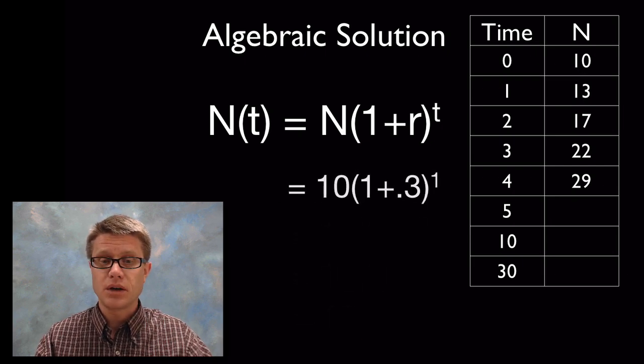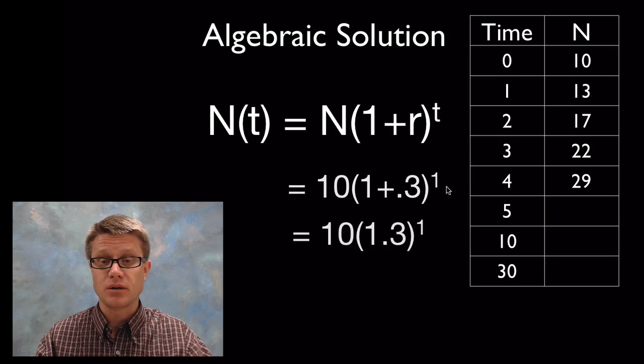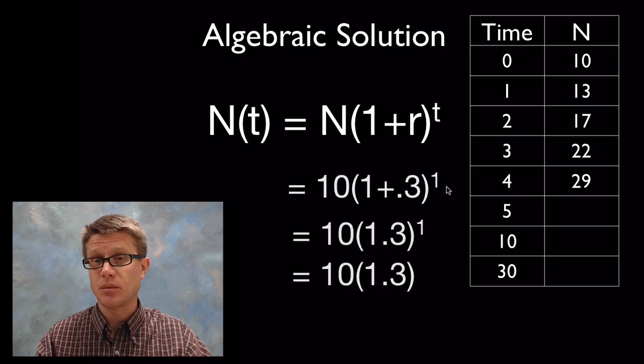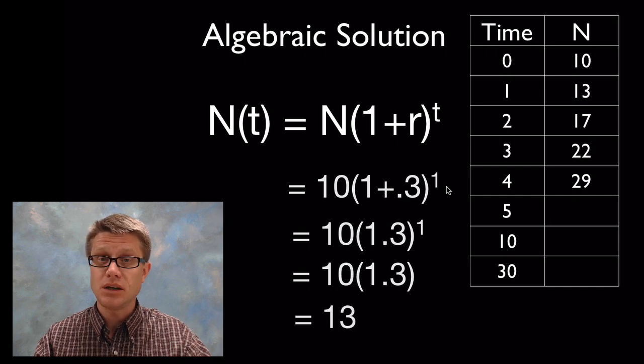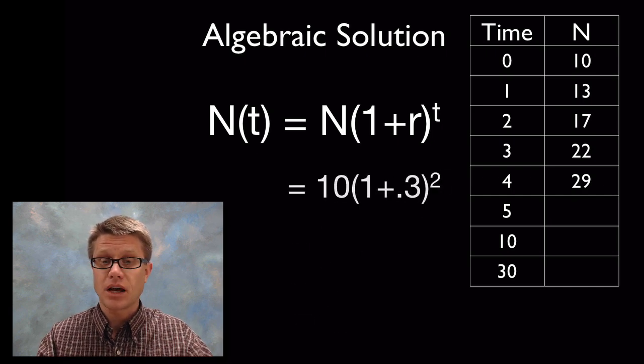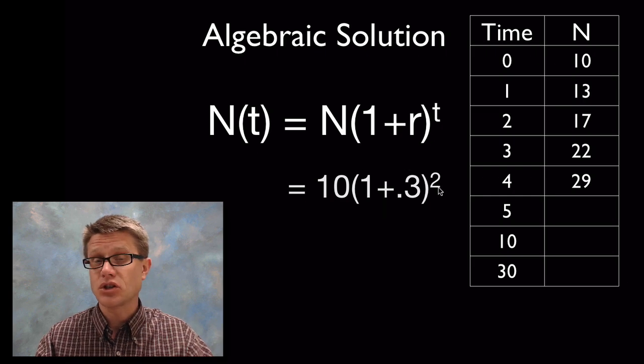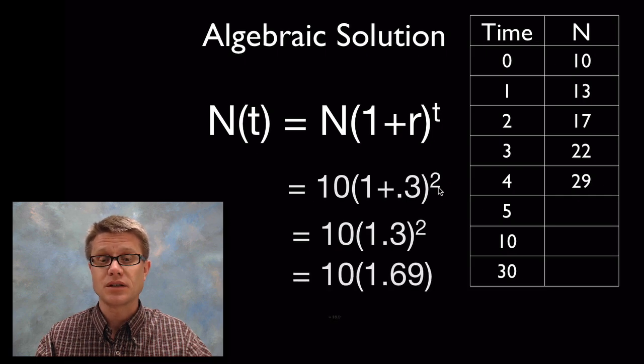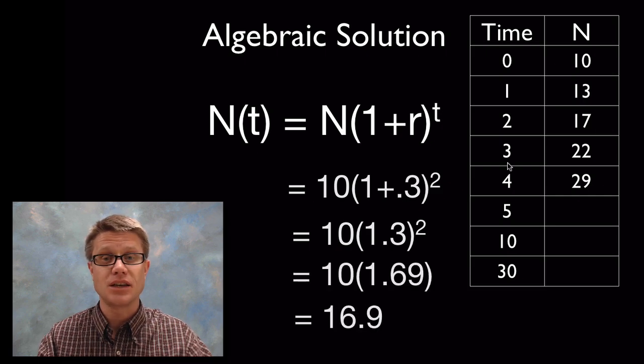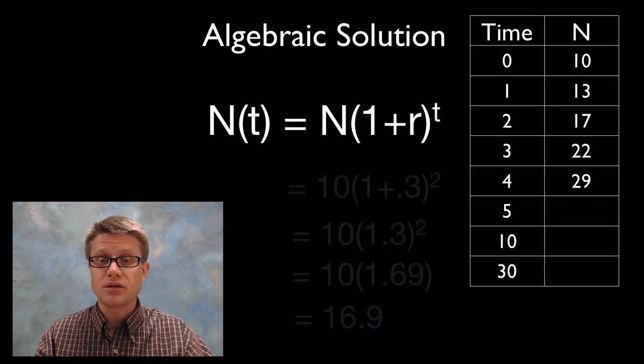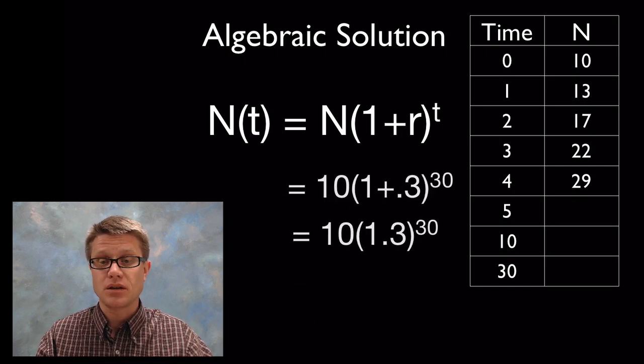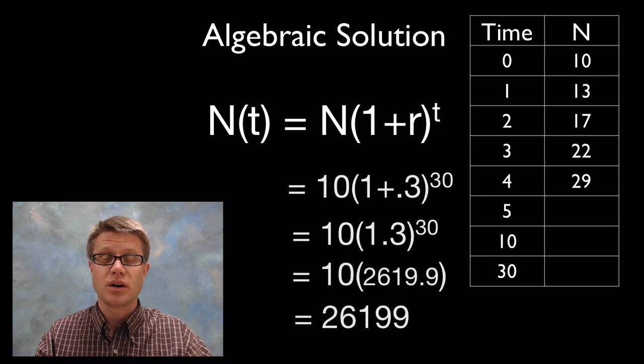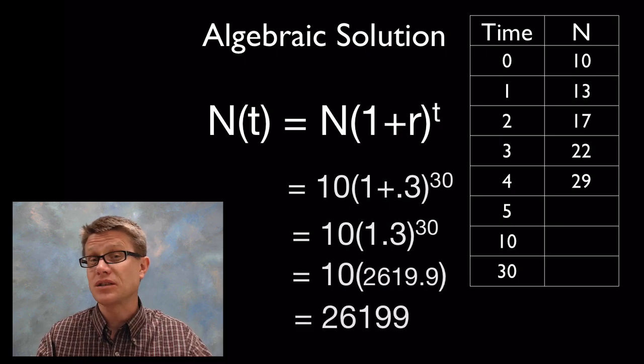So if we now put in 1 for time, it's going to be n is still 10. This is 1 plus r. Again the r is not changing. But we're raising it to the 1 power. Anything raised to the first power is going to be itself. So that's going to be 1.3. And we get 13. Let's try that again with 2. So if we go to the second power, again we plug in 2 here. It's the only thing that we're changing. So we get 1.3 to the second power. So we're going to have to square 1.3 which is 1.69. And we get 16.9 which is a lot like 17. Or I could just throw out another time. So let's say we go time 30. So then we're going to raise it to the 30th power. And so I get 26,199. Which is going to match up exactly with our spreadsheet.